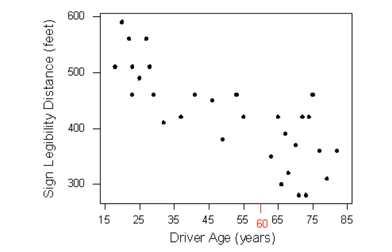How can we do this prediction? It would be useful if we could find a line, such as the one presented on the scatterplot, that represents the general pattern of the data.